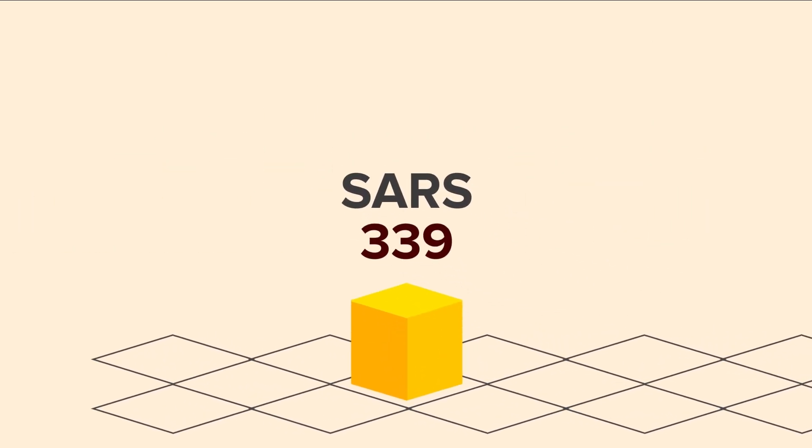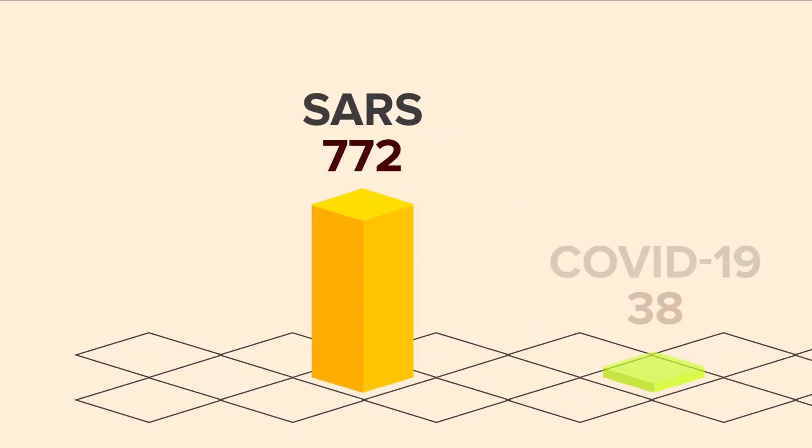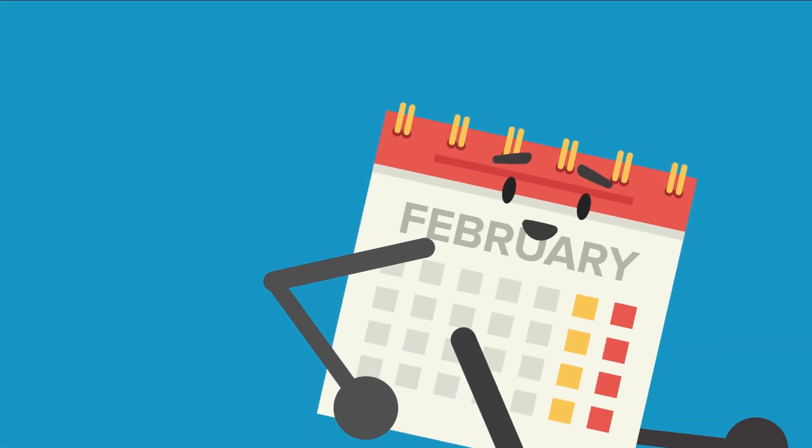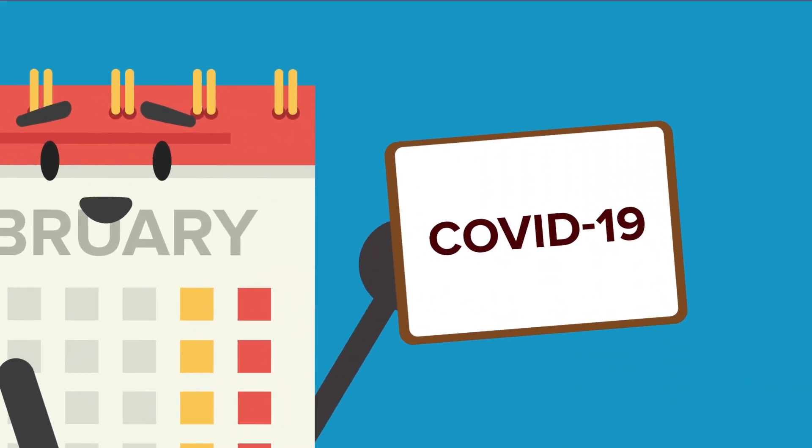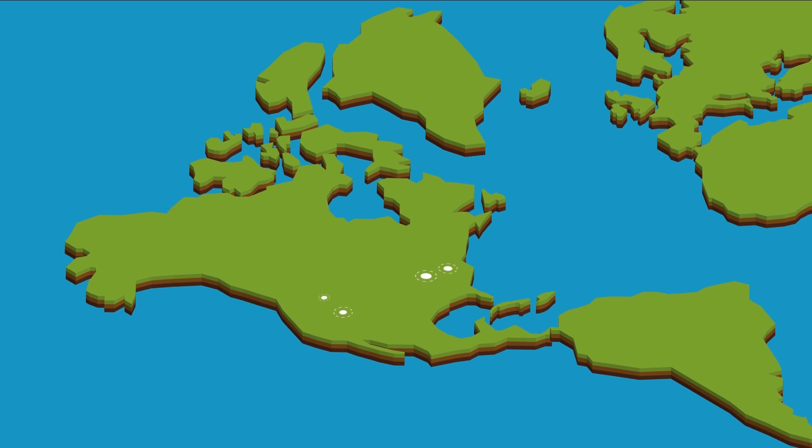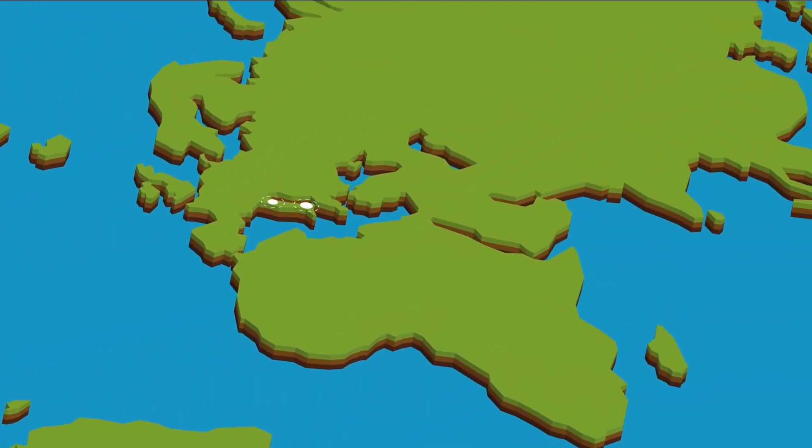By the 9th of February, the death toll in China had surpassed that of the 2002-2003 SARS epidemic, with 811 fatalities. February also gave us the virus's name, COVID-19, as well as huge outbreaks in the US, South Korea, Iran, and Italy.